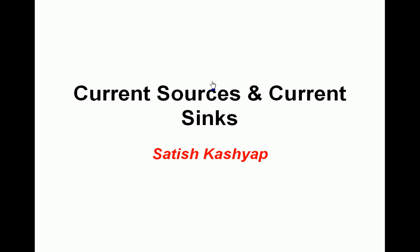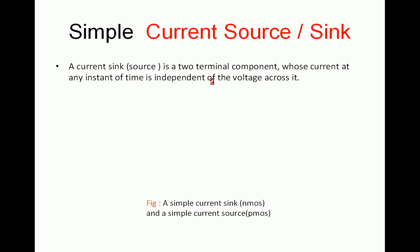In this introduction to current sources and sinks, a simple current source or sink is nothing but a two-terminal device where the current flowing through it must be constant irrespective of the voltage across its terminals. The current at any instant of time is independent of the voltage across it. A simple current sink is implemented with N-MOS and a simple current source is implemented with P-MOS.